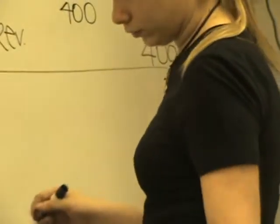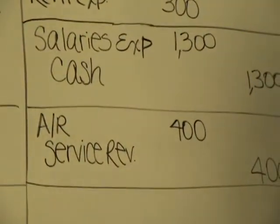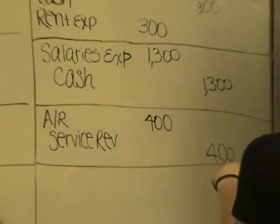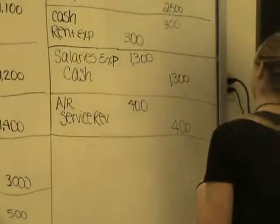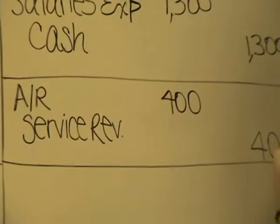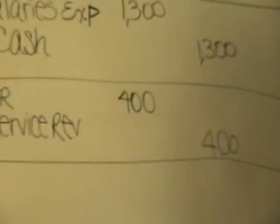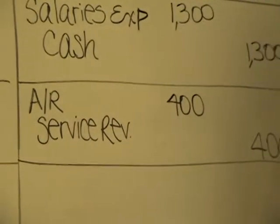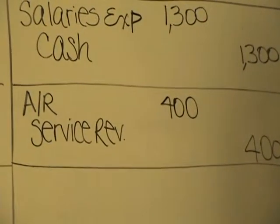All right, so the next entry was she got the revenue for 400 and it was services were performed. She posted up to account receivable, there's entry 8 in case it got missed, because she's going on without me here. All right, that was fantastic, revenue increased, that's right.